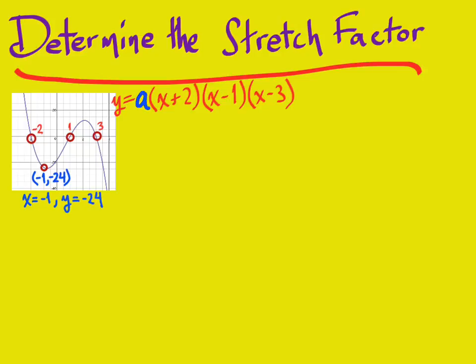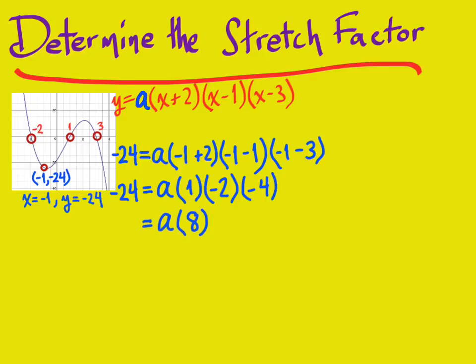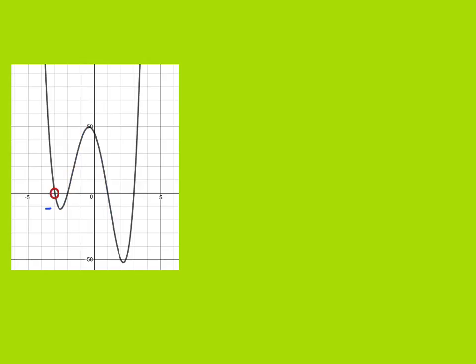When x equals negative one and y equals negative 24, I substitute those values into the equation. Replace y with negative 24 and replace all the x's with negative one. Now there's only one variable, 'a', and I can solve it quickly. Multiplying those out gives me positive eight times a on the right-hand side. So 45 equals 8a — dividing both sides by eight, I find that a equals negative three. That's my stretch factor, and the equation is negative three times all those factors.